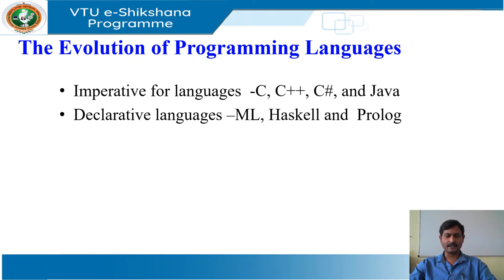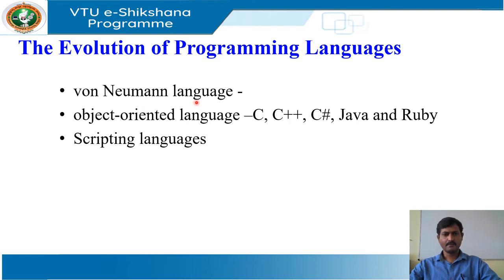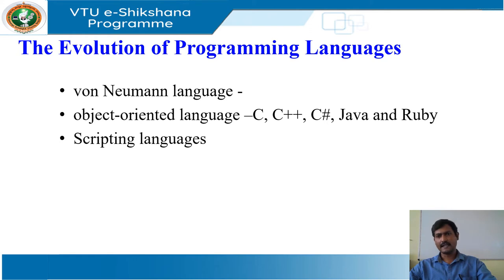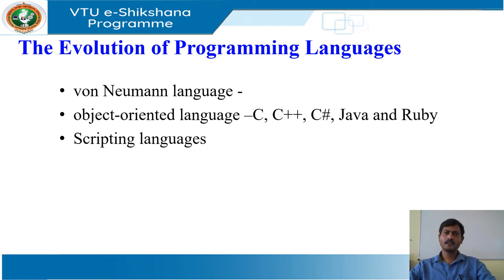Functional languages such as ML and Haskell and constraint logic languages such as Prolog are often considered to be declarative languages. The von Neumann language is a term given to programming languages whose computational model is based on the von Neumann computer architecture. Many of today's languages such as Fortran and C are von Neumann languages. An object-oriented language is one that supports object-oriented programming, a style in which a program consists of a collection of objects that interact with one another.